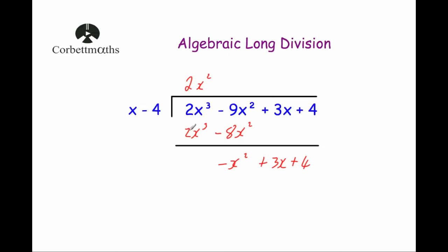We've done our division, multiplication, and subtraction. Now divide again: minus x squared divided by x is minus x, so write minus x above. Now multiply x minus 4 by minus x: minus x times x is minus x squared, and minus x times minus 4 — negative times negative is positive — so plus 4x.